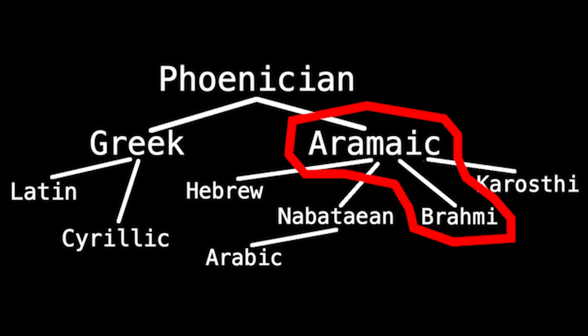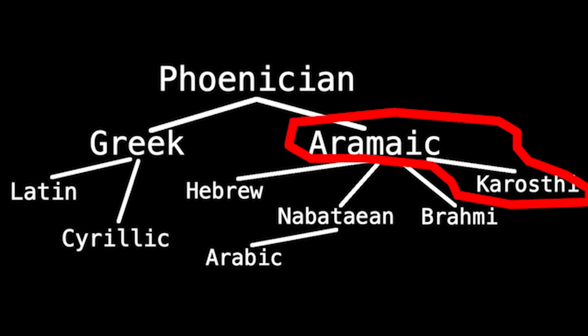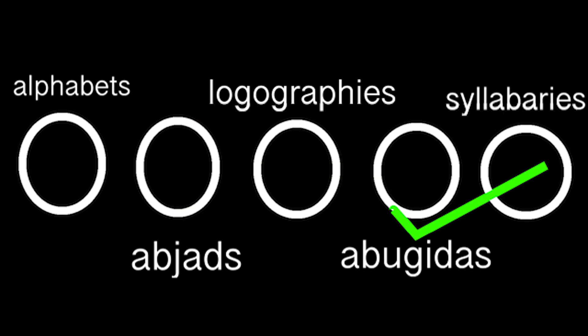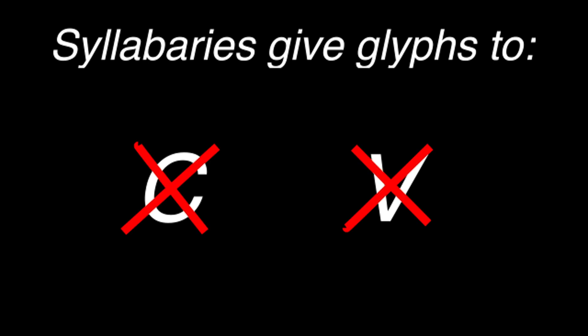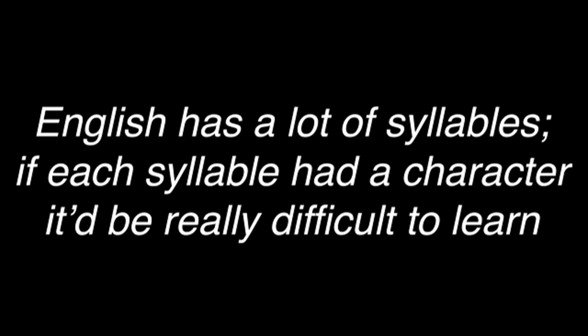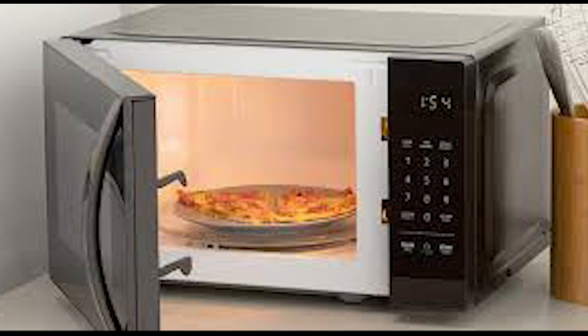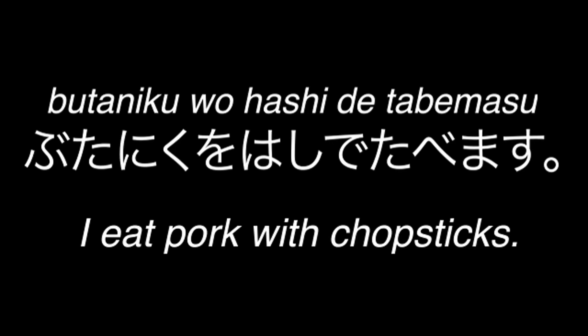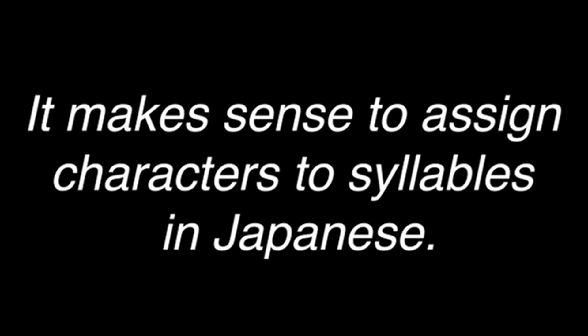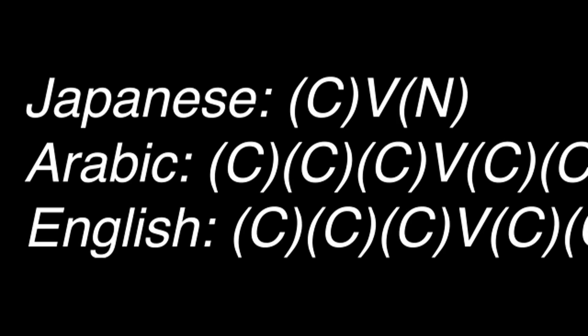Up until recently, people used to classify abugidas the same as syllabaries — but this is wrong. Syllabaries are systems which give symbols to different syllables rather than individual sounds. If English were a syllabary it would be incredibly difficult, with so many vowels and complex syllables. But Japanese, which uses a syllabary, works fine — it has a very strict syllable structure, mostly consonant-vowel pairs, giving only around 50 possible syllables. This Japanese sentence written in hiragana illustrates how it makes sense to assign glyphs to syllables. Because most languages permit more complex syllables than Japanese, syllabaries are fairly rare.